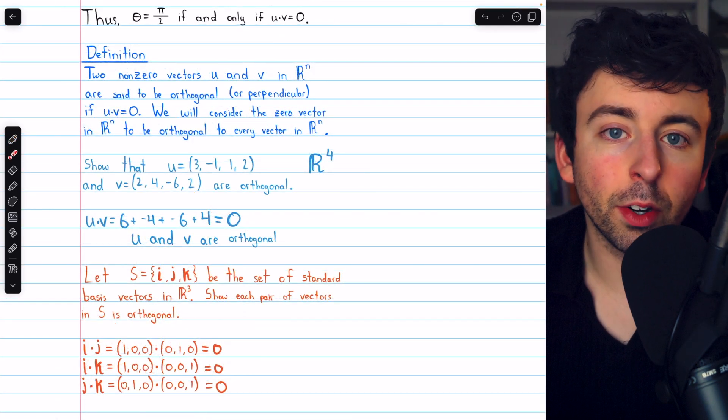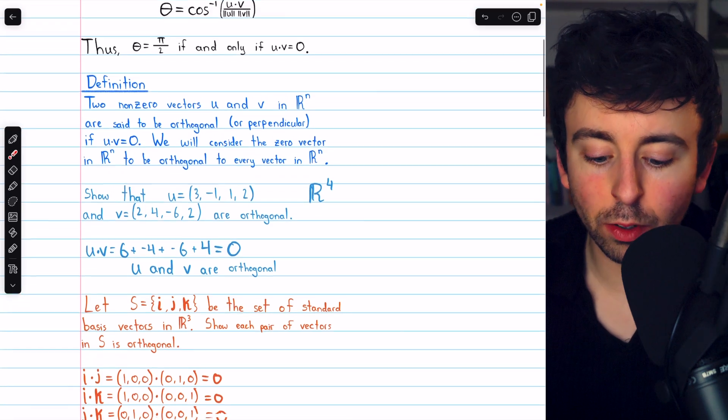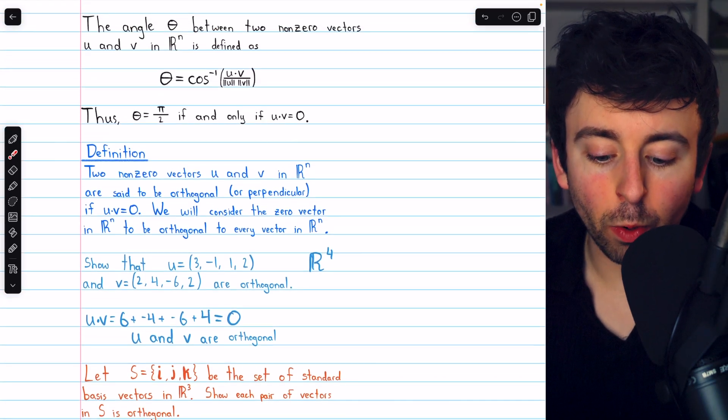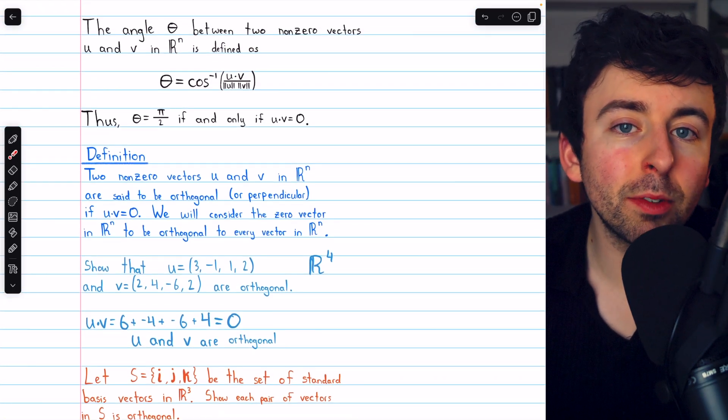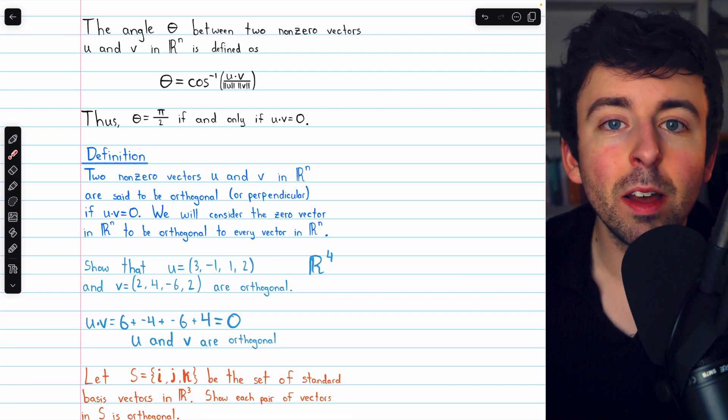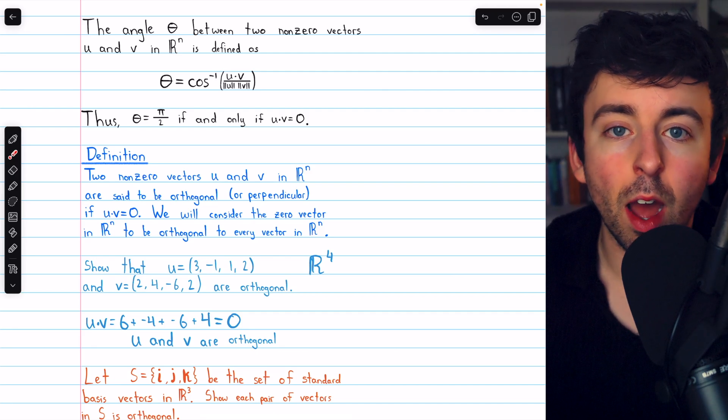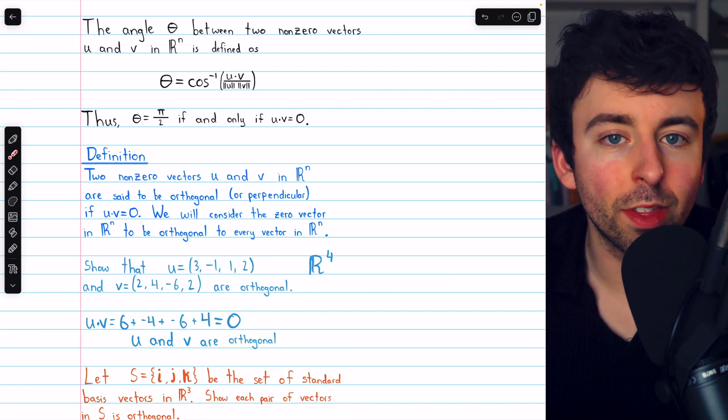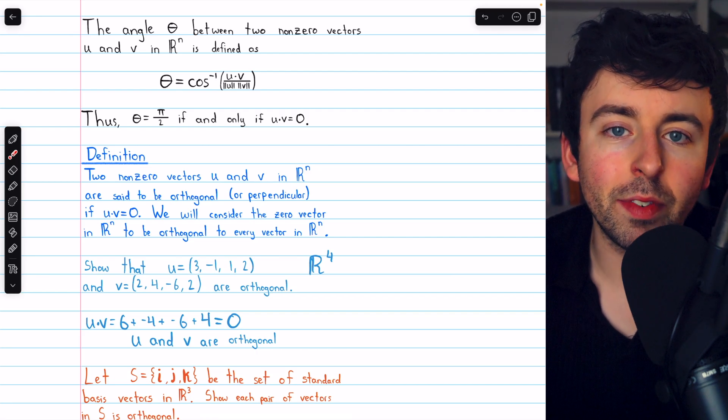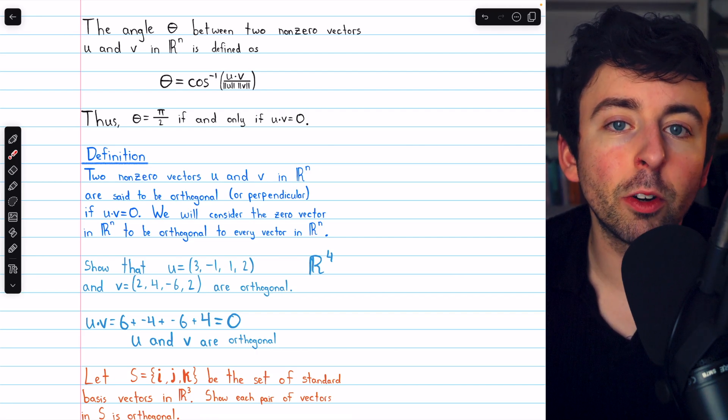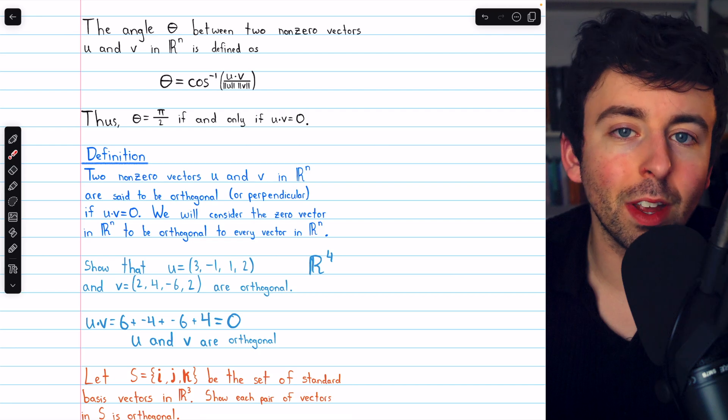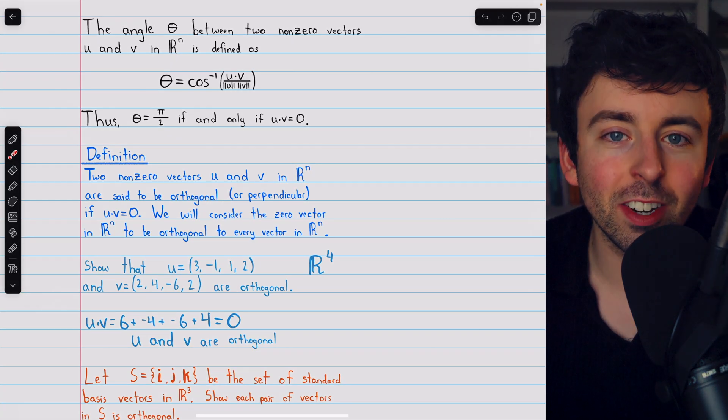So that's a quick look at orthogonal vectors and how we show two vectors are orthogonal. They are orthogonal if the angle between them is pi over 2, which can be checked by looking at the dot product. If the dot product is 0, the vectors are orthogonal. Let me know in the comments if you have any questions, and be sure to check out my linear algebra course and linear algebra exercises playlists in the description for more. Thanks for watching.